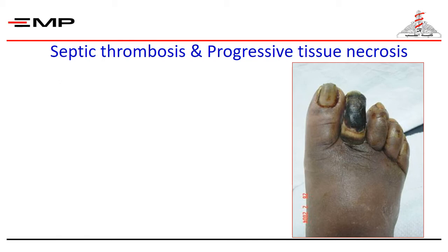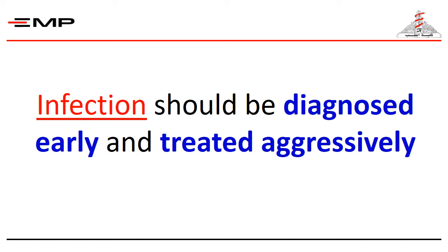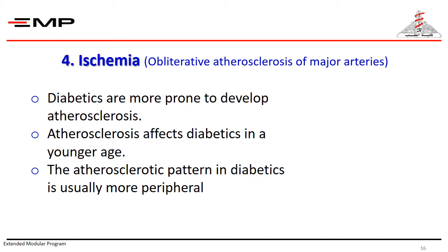When infection is established, inflammatory cells and some bacteria elaborate pro-coagulant substances, which may cause small-vessel thrombosis. Clinically, we describe this as septic thrombosis — this is the main cause of progressive tissue necrosis in the non-ischemic foot. The golden rule: infection should be diagnosed early and treated aggressively.